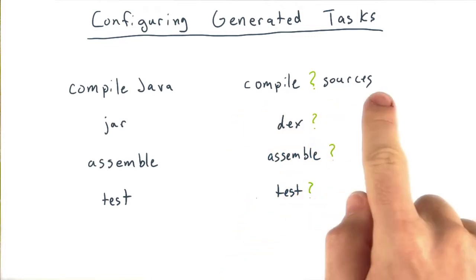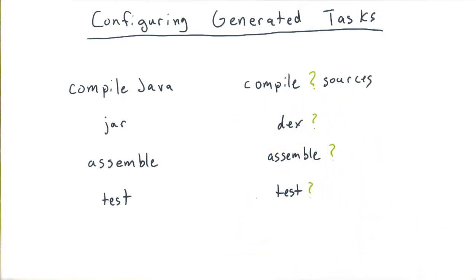Additionally, the names of these tasks are generated, and they're based on the name of the particular variant the task is for. Not only that, but these tasks are created at a very late stage of the project configuration lifecycle, which means in most cases, we can't directly reference them in our build script.